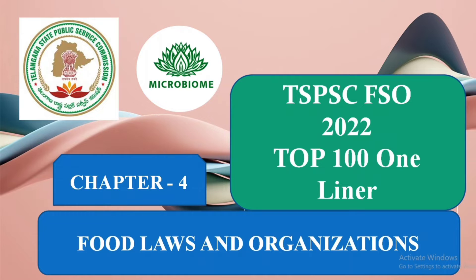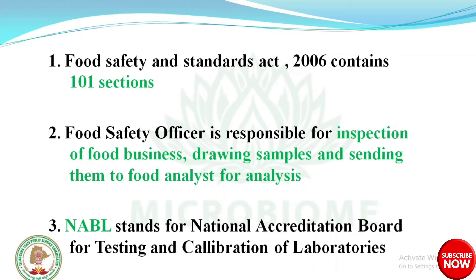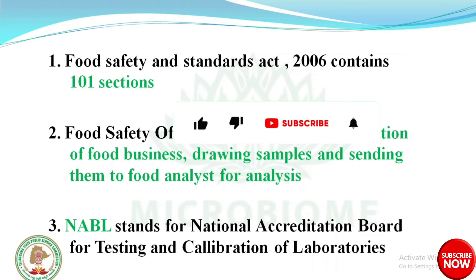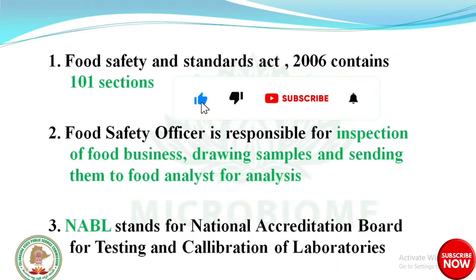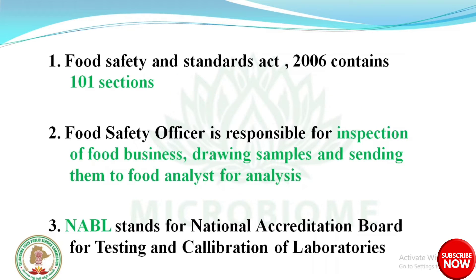Let's move on to the slide. First, the Food Safety and Standards Act 2006 — it contains 12 chapters and 101 sections. The books published by Food Safety and Standards Authority of India: yellow book for school, orange book for workplace, purple book for a store, and pink book for kitchen.